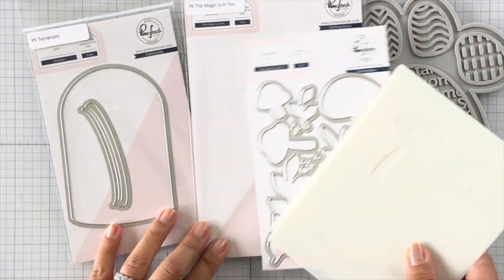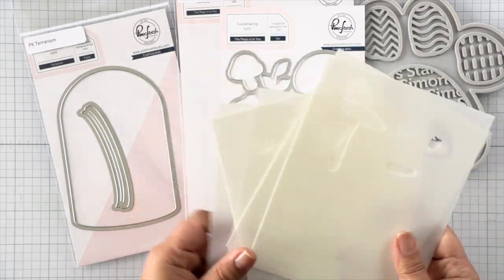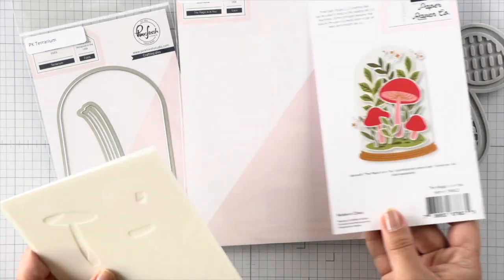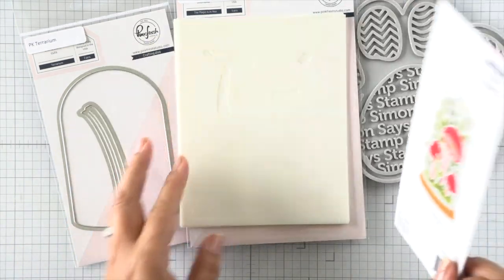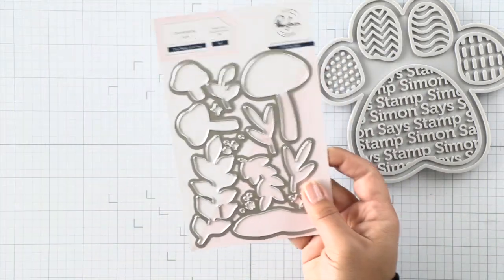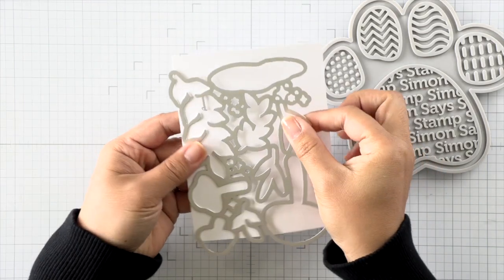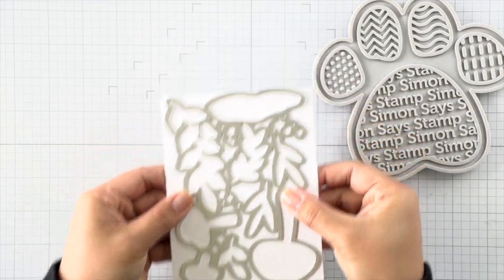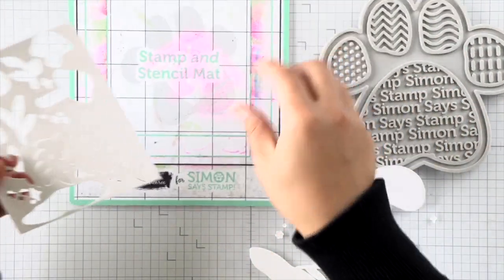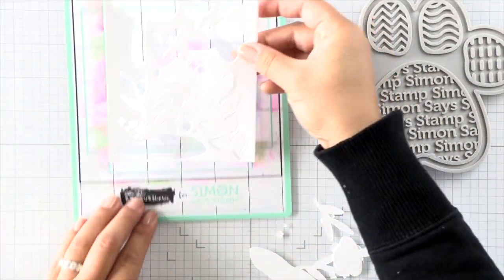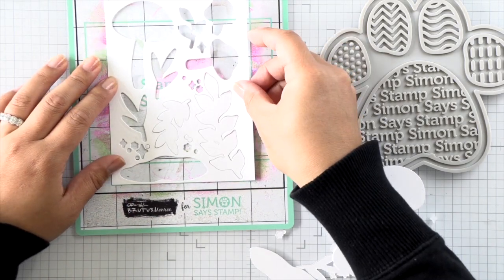The coordinating products I used today include the terrarium die on the left as well as a mushroom builder set called The Magic Is In You. That set comes with a die as well as coordinating stencils to help you add color. Because these dies come attached together, you don't clip them apart. My biggest tip is to die cut first before stenciling. This is really going to help out with the placement of all of the stencil layers and make sure that when you line up each layer everything will be stenciled in the correct areas.